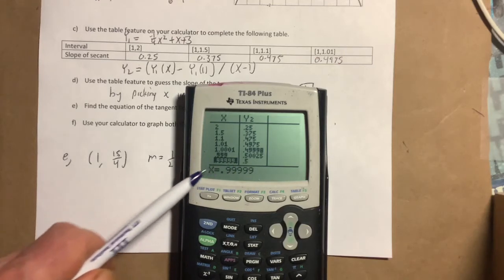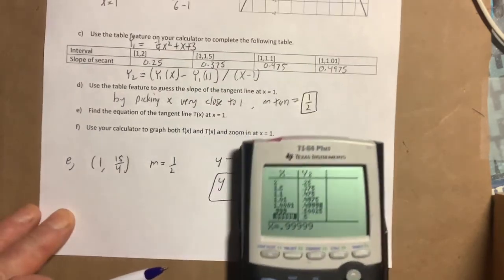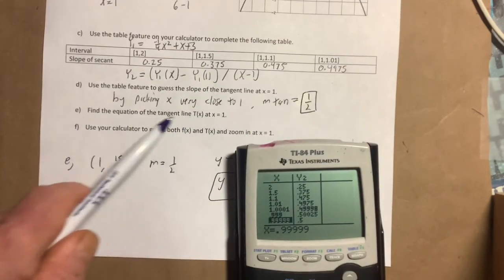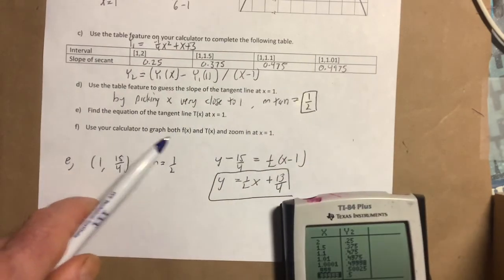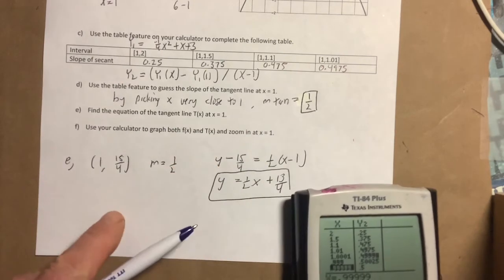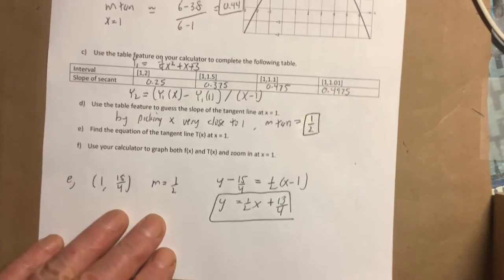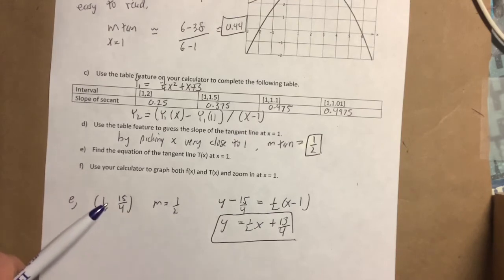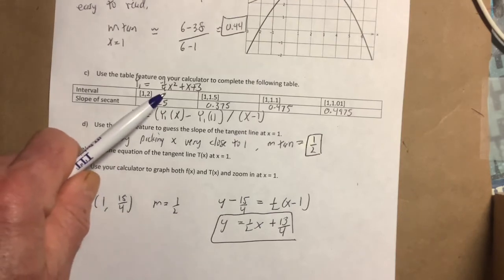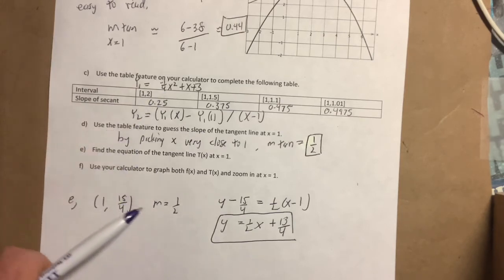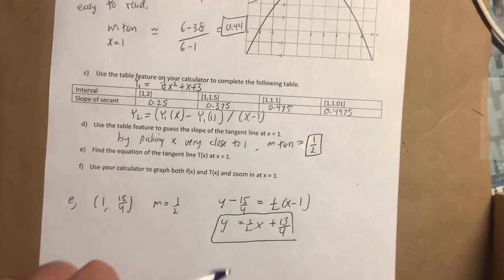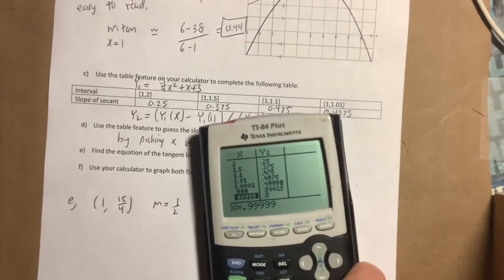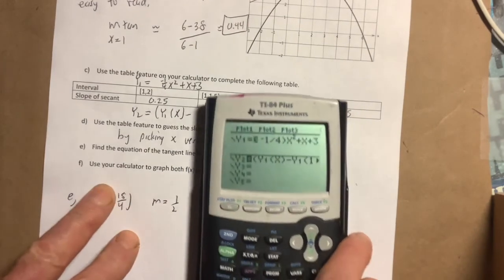All right, so that's what we get. Now find the equation of the tangent line. Well look, if the slope is 1 half, the rest is just an algebra problem. If the slope is 1 half, when you plug in 1 for x, you can compute the y-coordinate. I get 15 over 4—you can check me on that. So there you go, there's the equation of the tangent line.